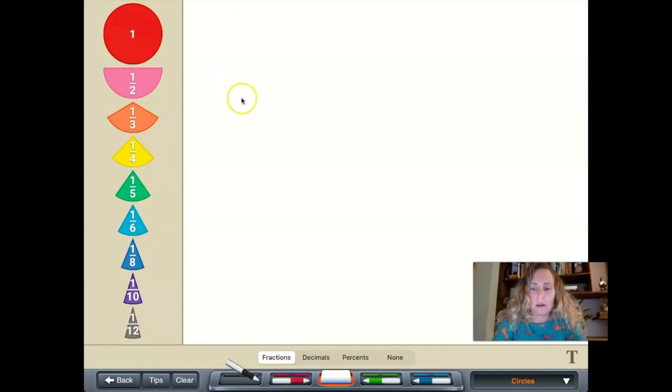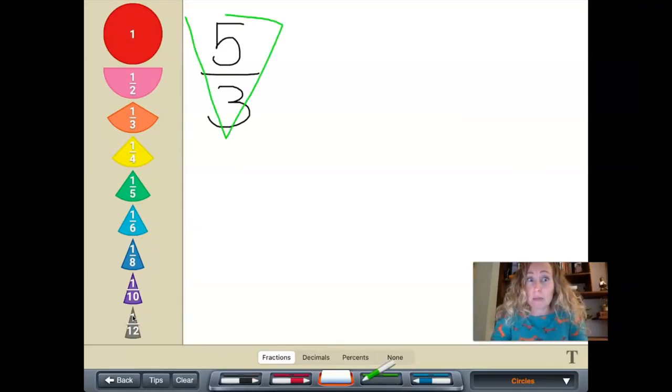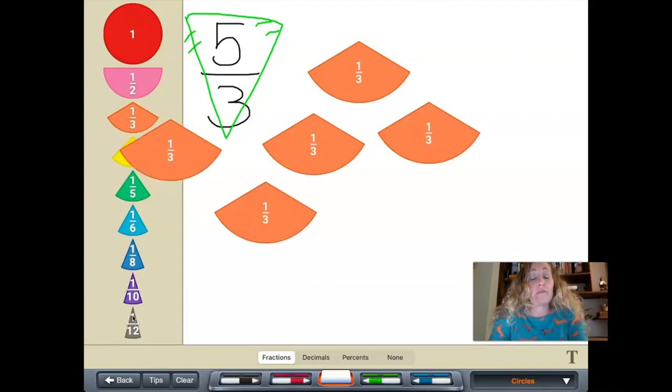Some of you might be thinking, oh no, I forgot how to turn an improper fraction into a mixed number. And that is fine. That is something that happens to everybody. So I'm going to just make a very basic improper fraction. How I know it's improper is that the numerator is greater than the denominator. I know it takes three thirds to make one whole. So if I have five of those thirds, I know that it is bigger than one.